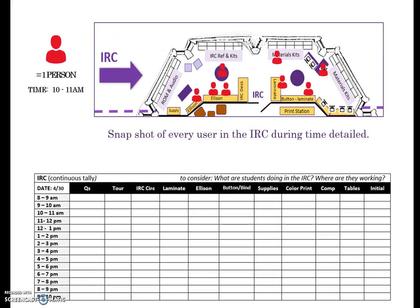Here is an IRC chart; above it is the IRC floor plan. Each red silhouette represents one user in an area between 10 and 11 AM. When gathering data for that hour, how would you complete the chart? There is one person browsing material kits, two people laminating, three people working with the Ellison machines, one person using an IRC computer, and one person sitting at a table.